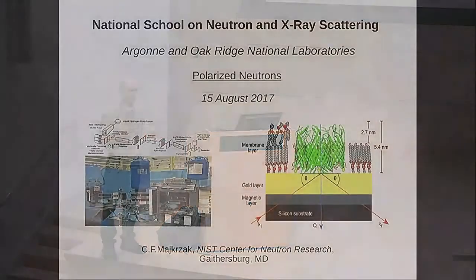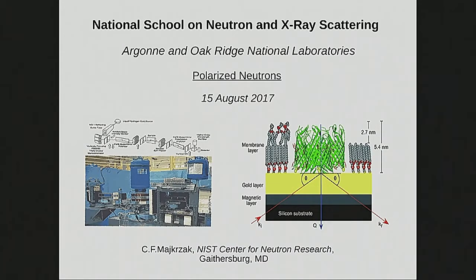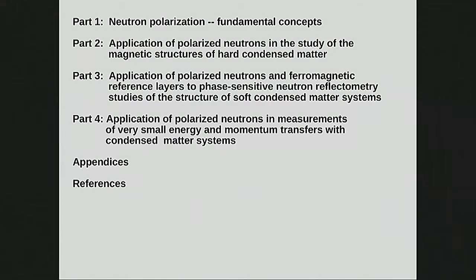That's important to remember with the averaging business. The second discussion this morning is about polarized neutrons — a lot of this will be in the context of diffraction, elastic scattering at low angles, and reflectometry. But it also applies to other kinds of scattering experiments that make use of the neutron's magnetic moment.